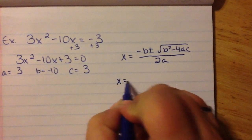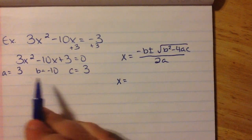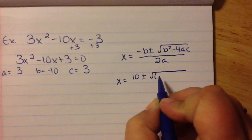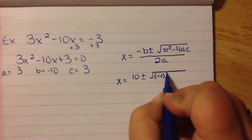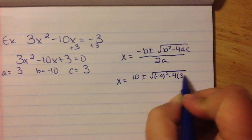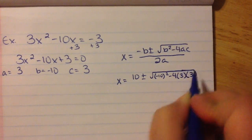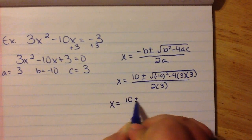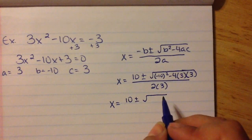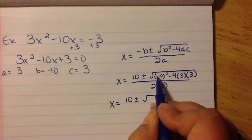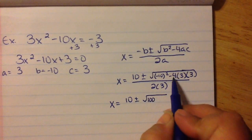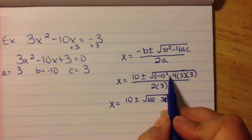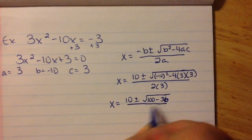So x equals opposite b — our b is negative 10, so the opposite is 10 — plus or minus the square root of, and we put this in parentheses, negative 10 squared minus 4 times a, which is 3, times c, which is 3, divided by 2 times a. So negative 10 times negative 10 is 100, and then we have 4 times 3 times 3, which is 36. I count my negatives: there's only one, so I'm going to be subtracting, over 6.